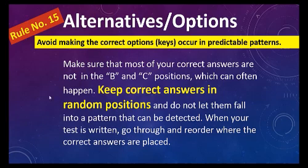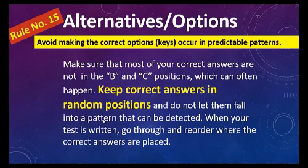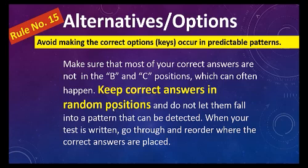Rule number fifteen: avoid making the correct options or keys occur in predictable patterns. Don't let correct answers run as A A A A, then B B B B, or cycle as A B C D A B C D repeatedly. Candidates are smart — they can recognize patterns and guess. The goal is to keep correct answers in random positions.